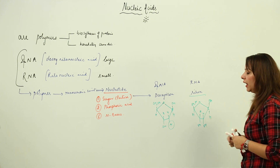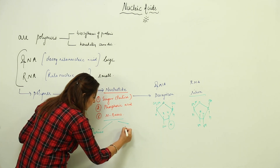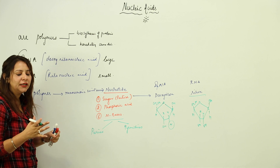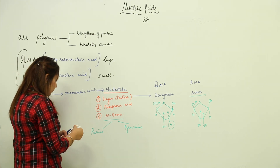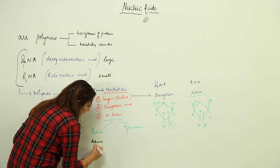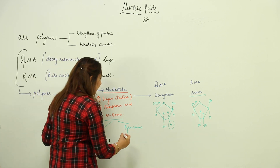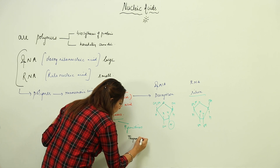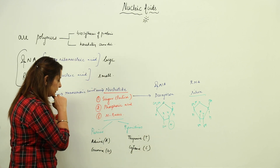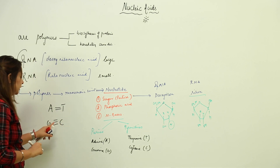If we talk about nitrogenous bases, they are of two types: purines and pyrimidines, and purines always pair with pyrimidines. There are two types of purines: adenine (A) and guanine (G). The pyrimidines are thymine (T) and cytosine (C). Adenine always pairs with thymine via a double bond, and guanine always pairs with cytosine via a triple bond.